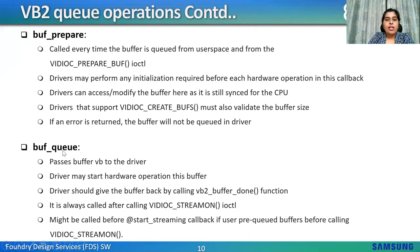buf_queue: always called after stream_on IOCTL. It can be called before stream_on if the user provides pre-queued buffers before start_streaming is called. This buffer VB is passed to the driver, which may start hardware operations on it. The driver should return the buffer by calling vb2_buffer_done, which should be called after a hardware operation on a buffer is finished and the buffer can be returned to user space. The driver cannot use the buffer anymore until it is queued back by the videobuf layer via the buf_queue callback. Only buffers previously queued by buf_queue can be passed to vb2_buffer_done.